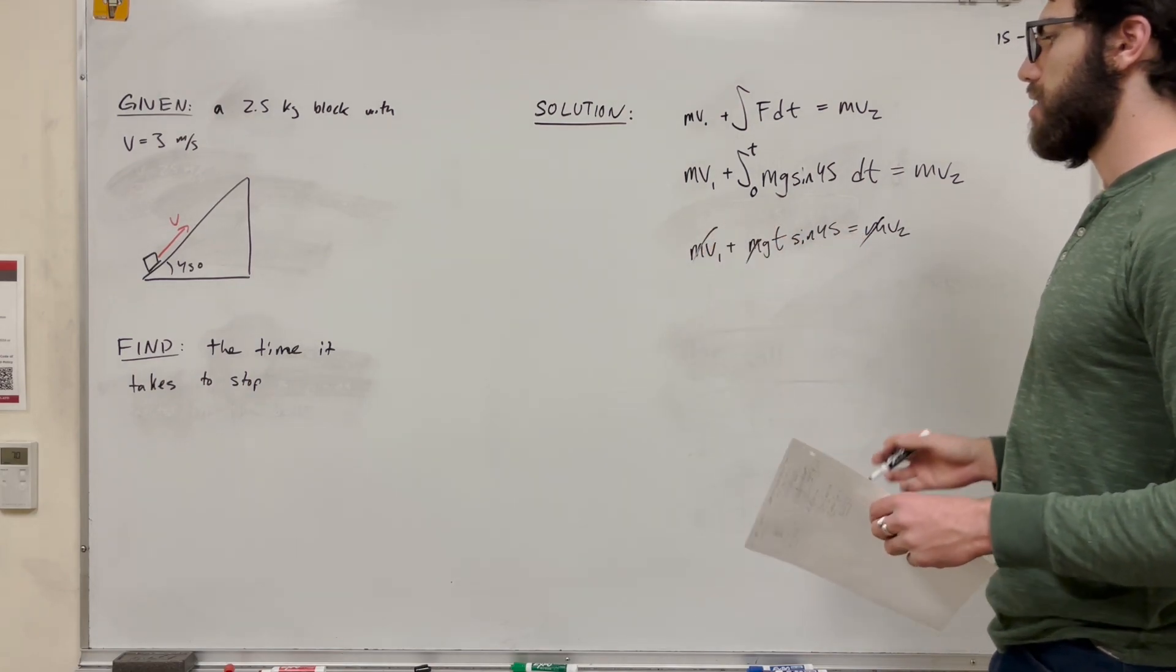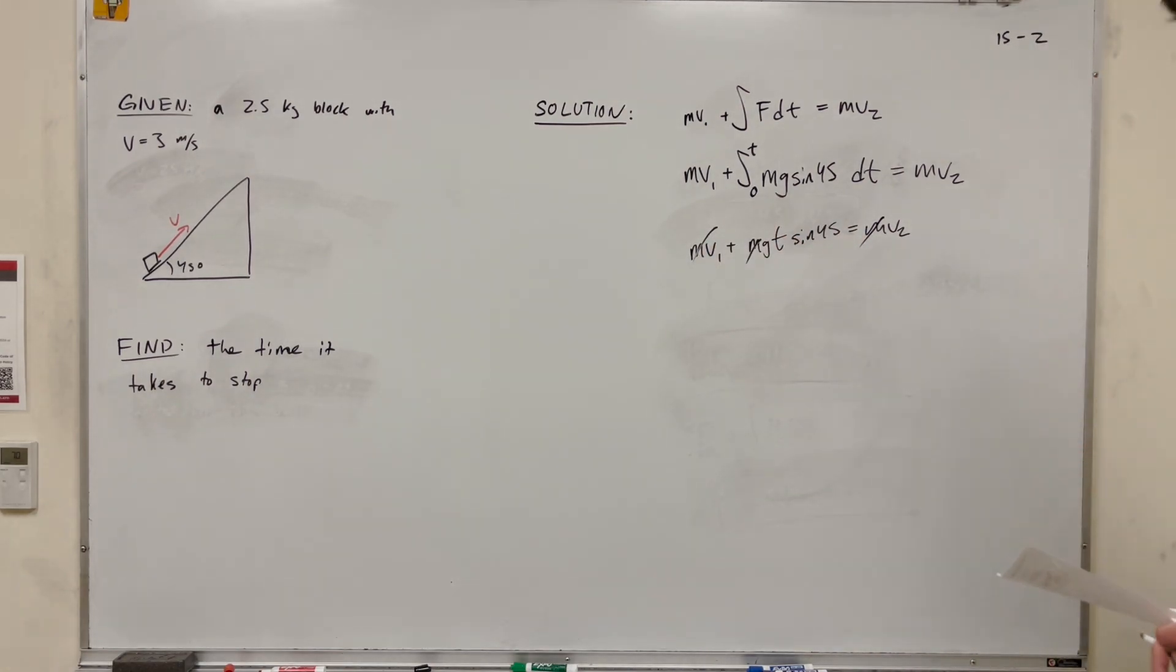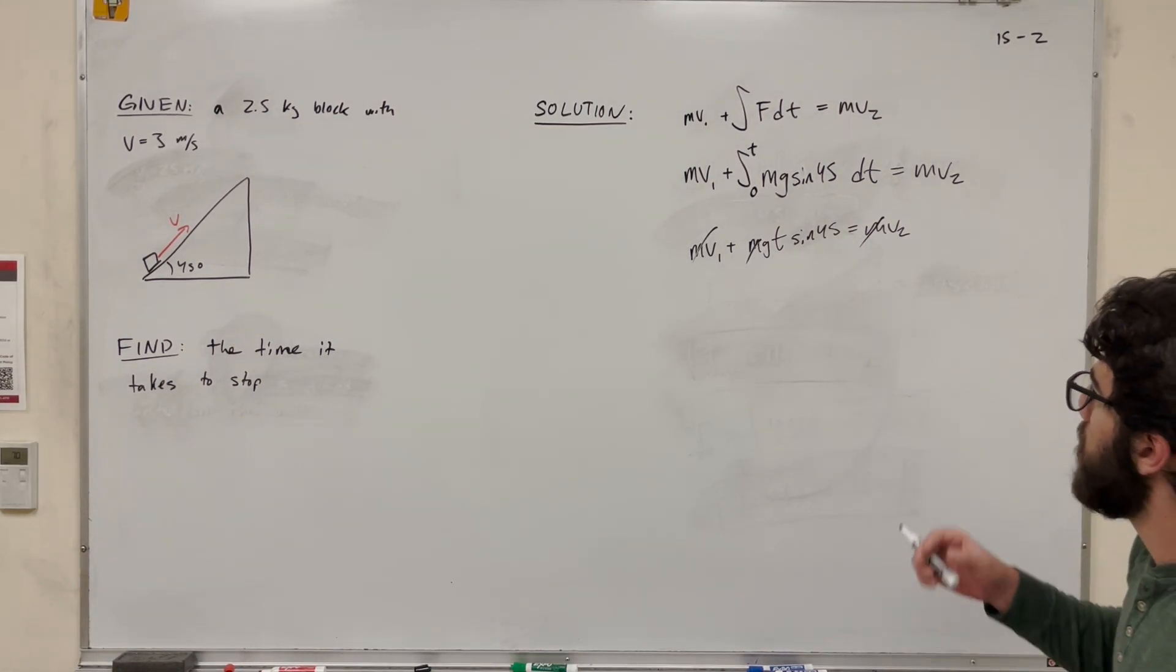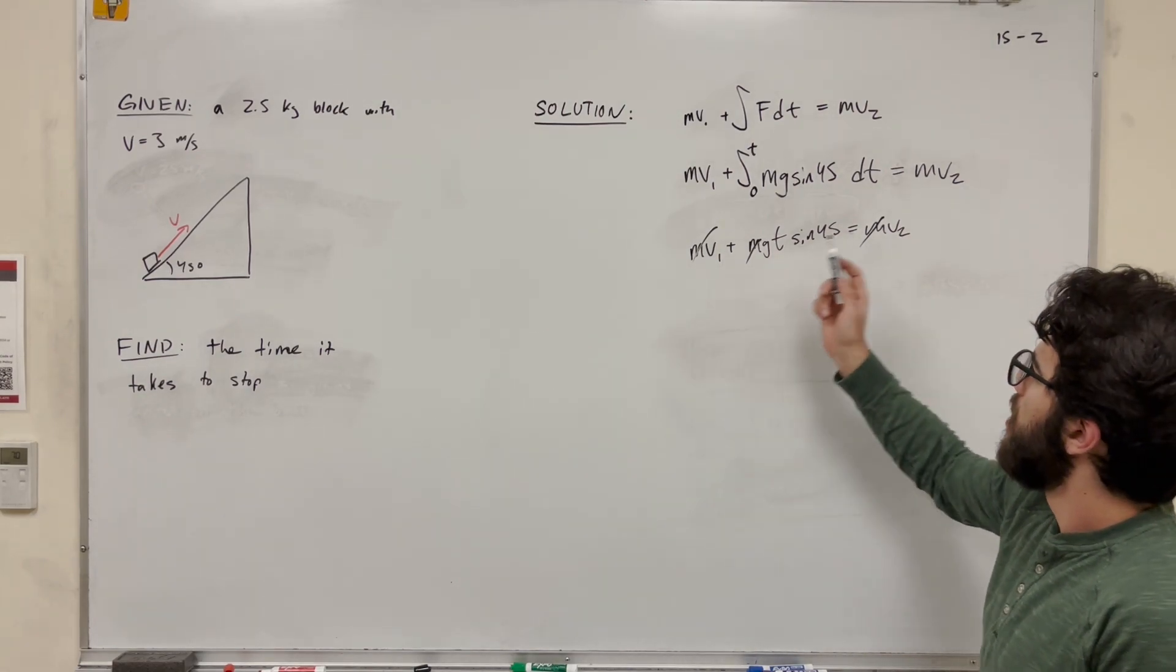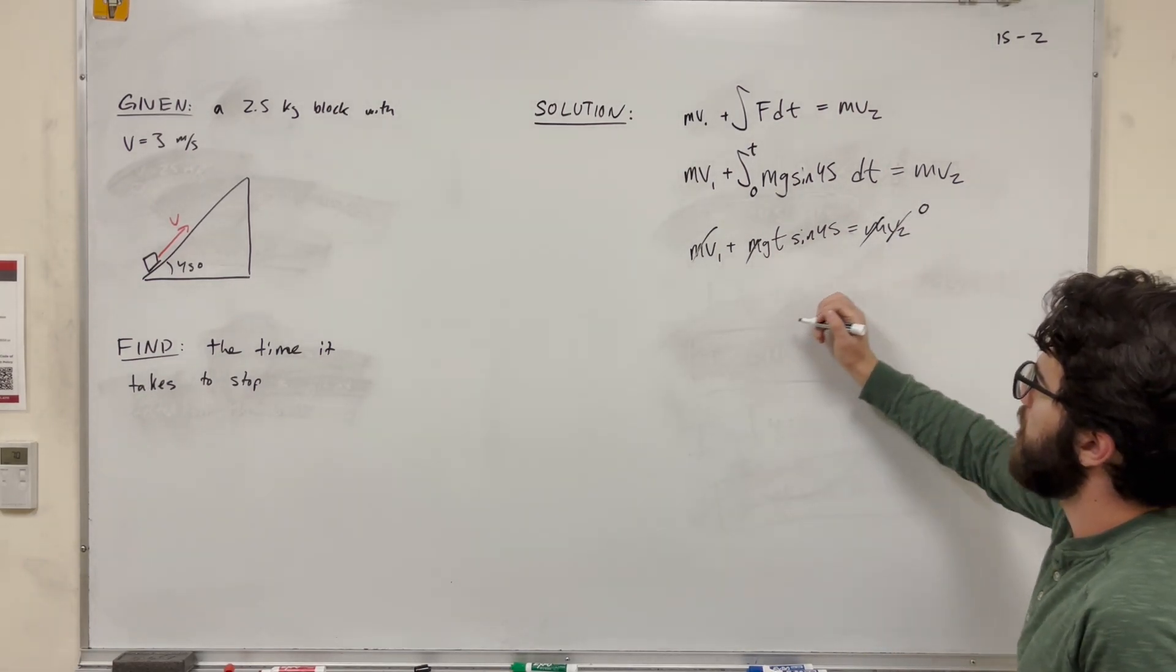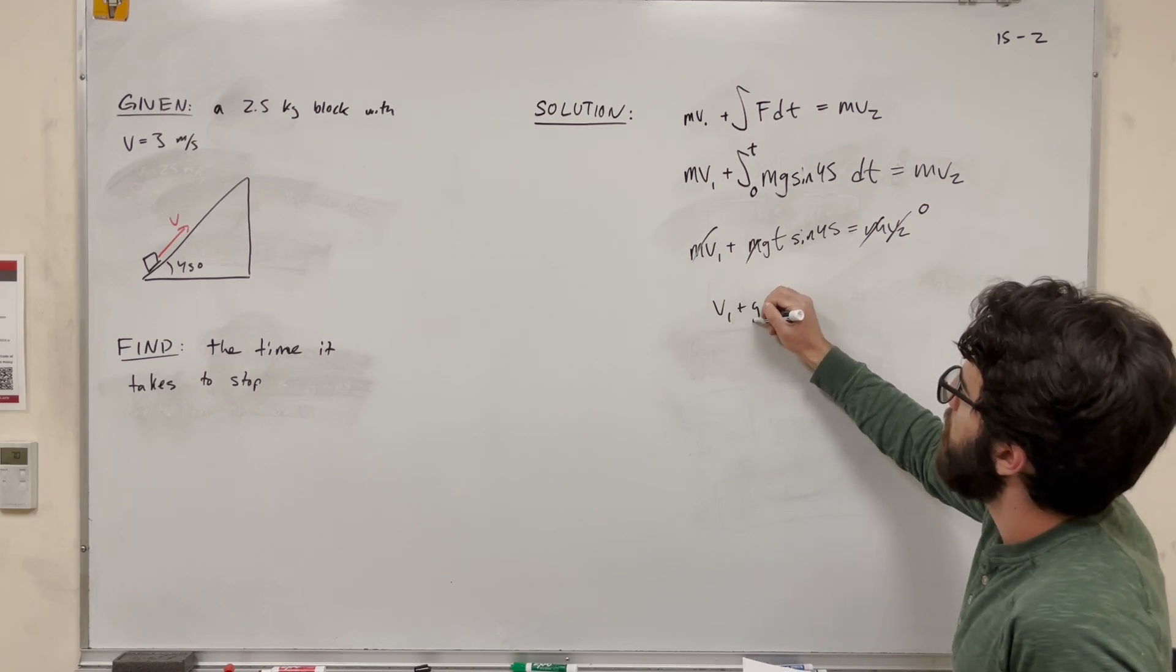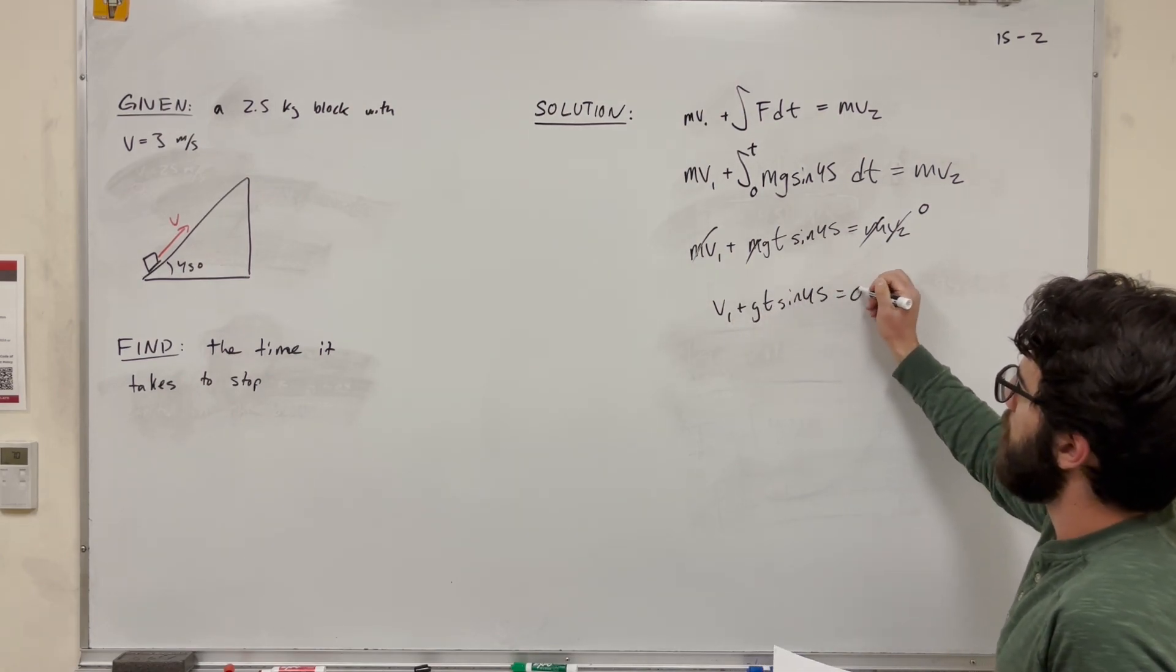Masses are going to cancel because they're all the same. And we're solving for T, so we need to move this around to get that. So velocity 2, right, we're waiting until it comes to a stop. So velocity 2 is going to be equal to 0. So basically, we're getting velocity 1 plus gravity times sine of 45 times T is equal to 0.